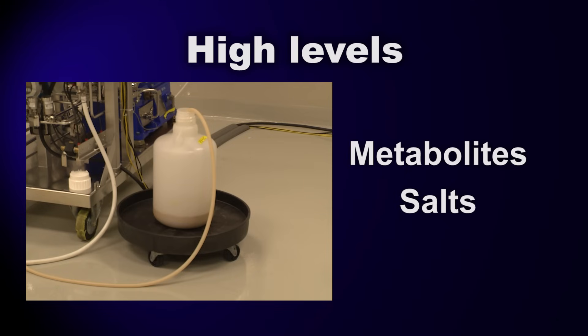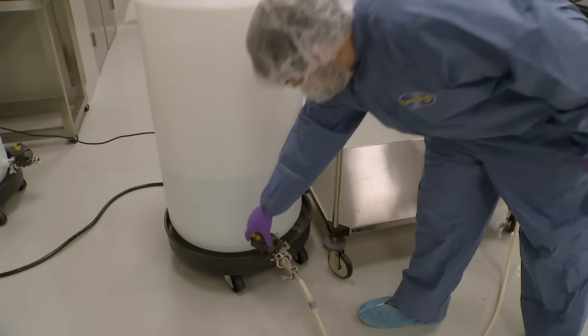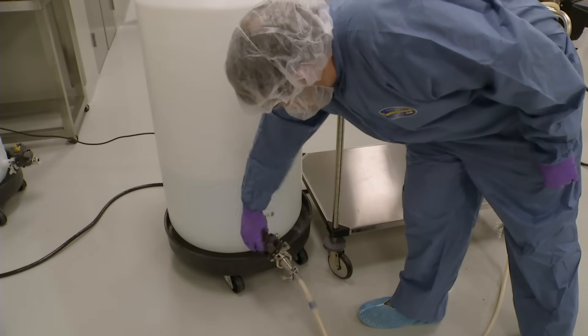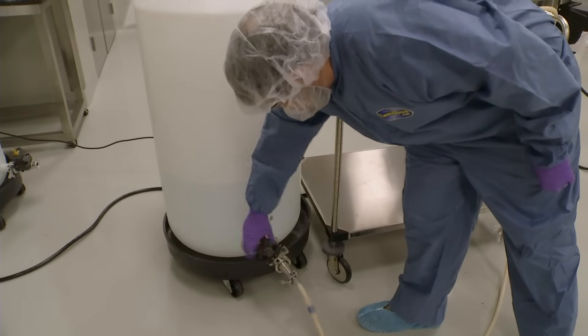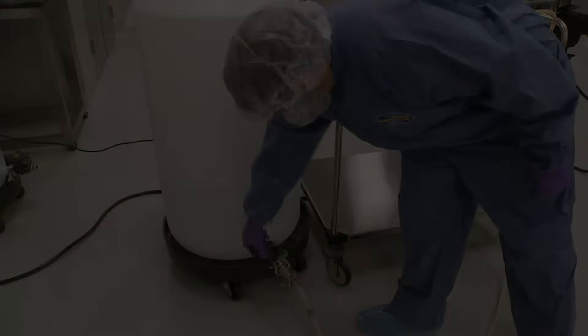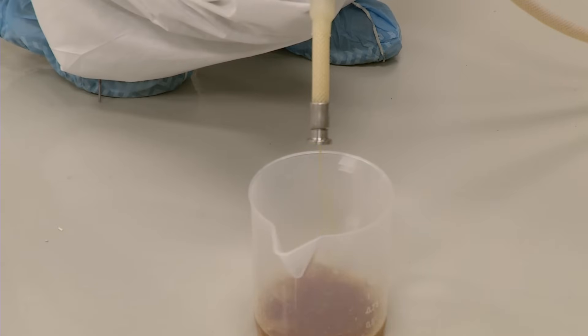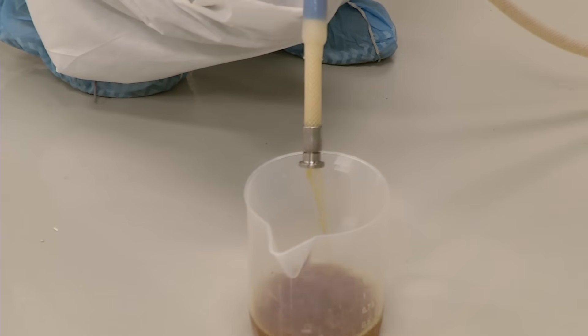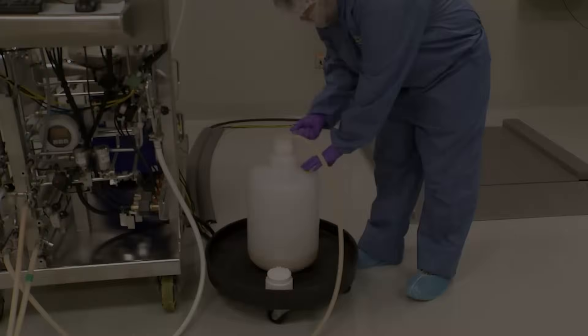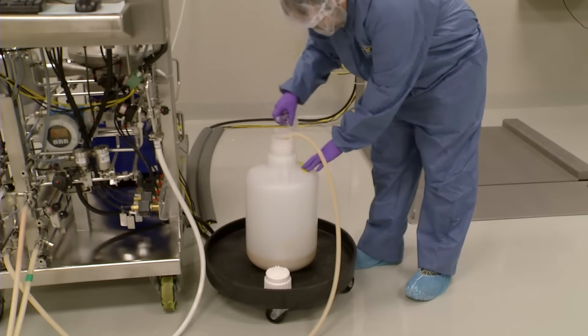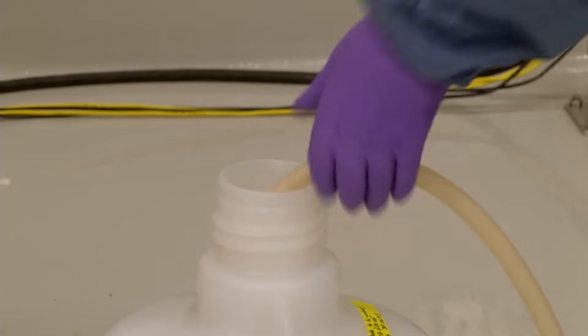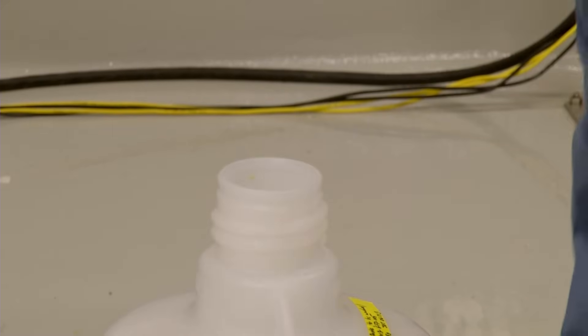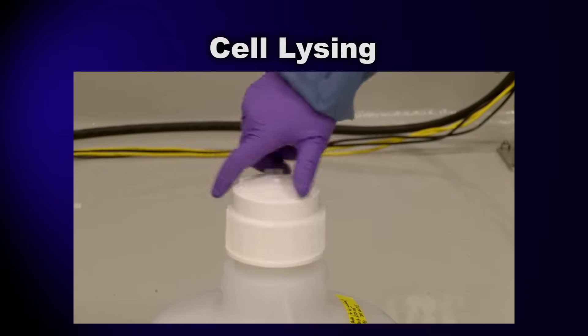So we're going to lower those levels by washing the cells. The cell paste is suspended in a buffered solution and then run through the centrifuge again. As the clarified liquid leaves the centrifuge this time, it carries many of the contaminants from the fermentation step with it. The cells, once again in paste form, are ready for the next step: cell disruption, also called lysing.